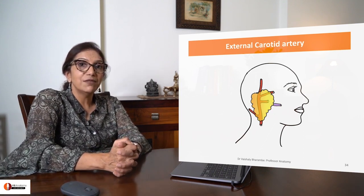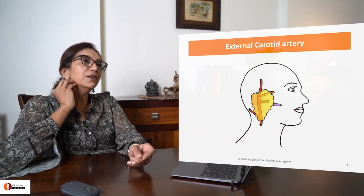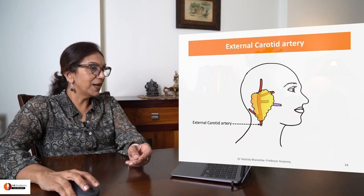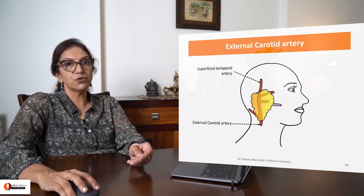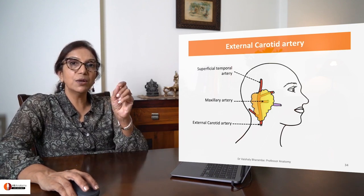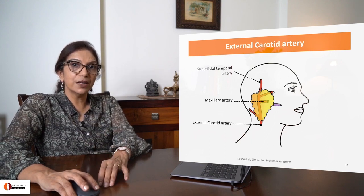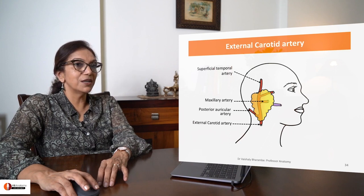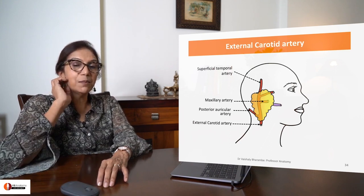Let's go to the deepest structure, which is the external carotid artery. This artery enters into the gland from below through the carotid triangle and finally divides into the superficial temporal artery and the maxillary artery, which are the terminal branches of the external carotid artery. Sometimes the external carotid might give an additional branch, the posterior auricular nerve, within the parotid gland.